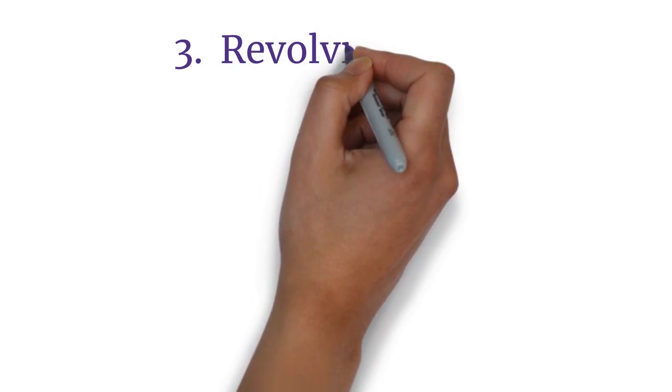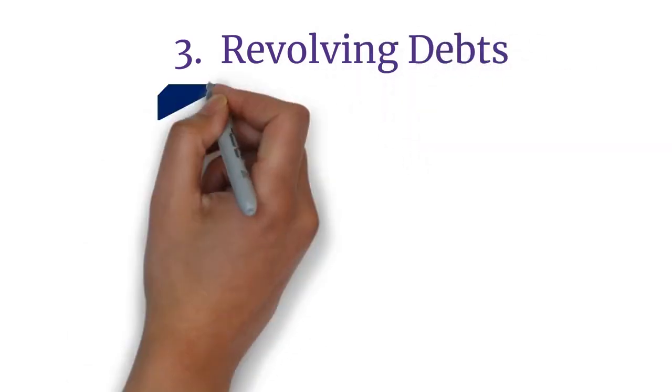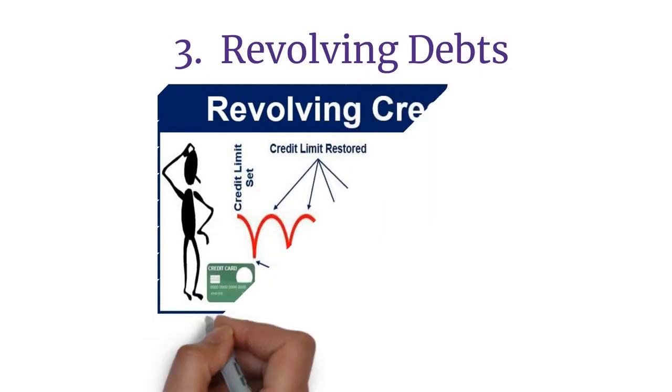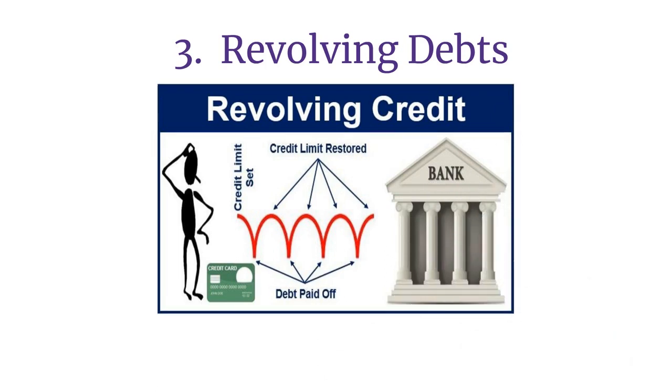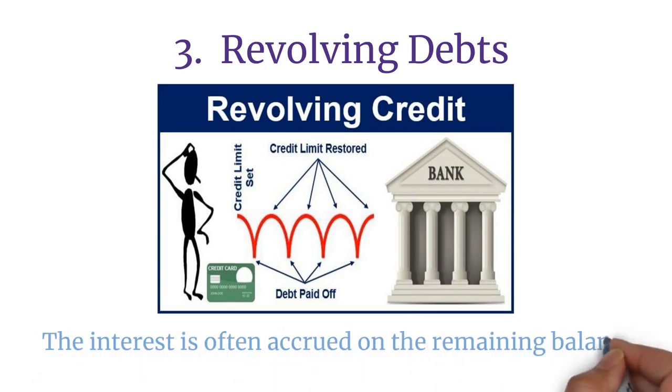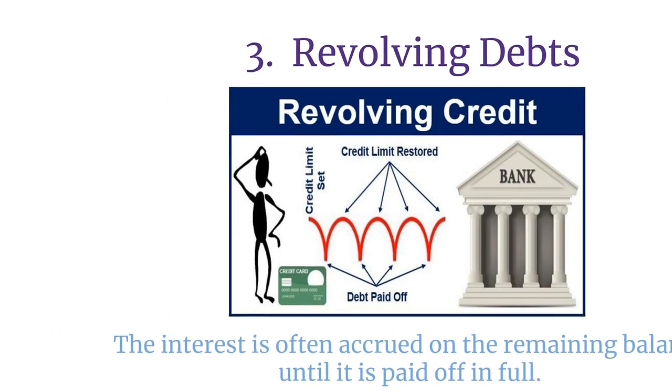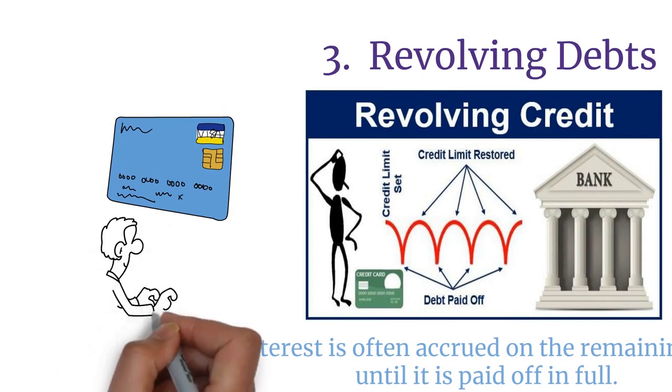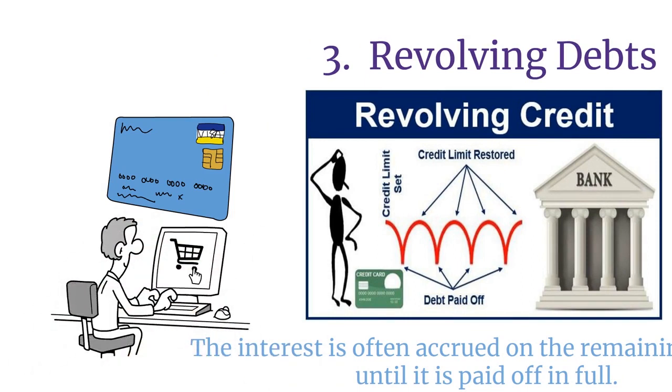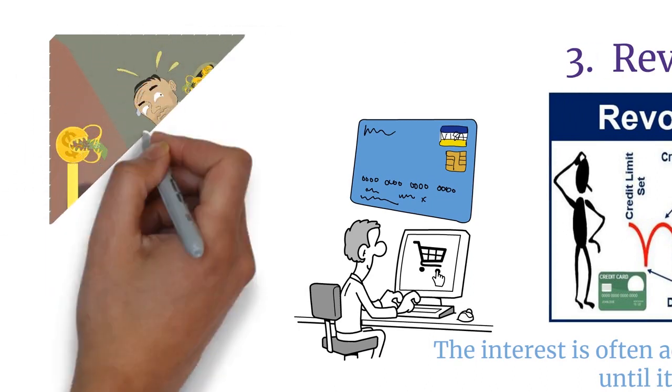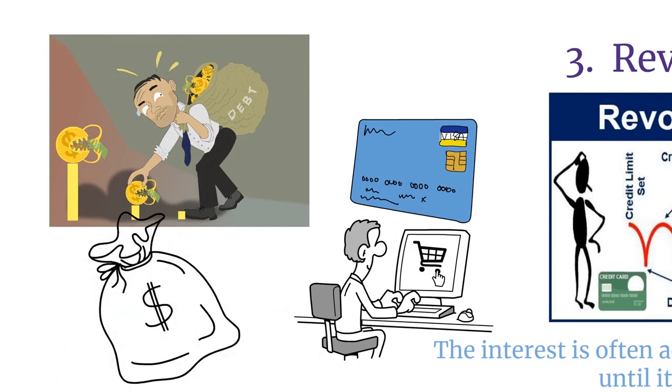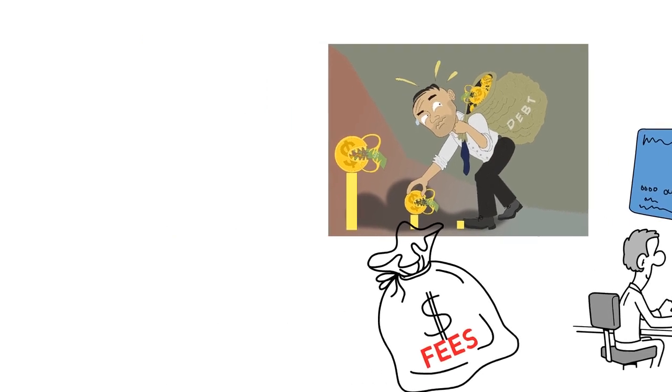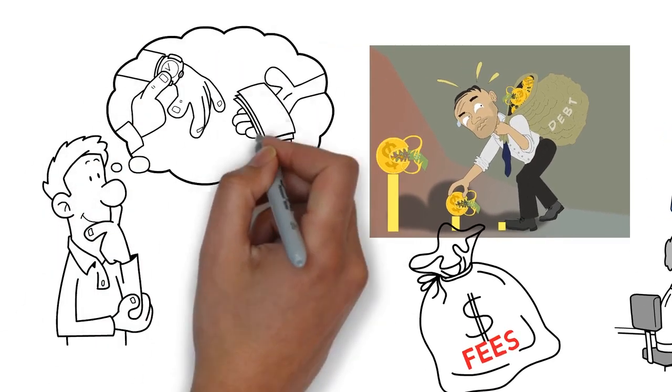Revolving debts. Revolving debts are lines of credit that can be accessed and used over and over again. This means that the borrower can use the available credit as needed within a predetermined limit. The interest is often incurred on the remaining balance until it is paid off in full. A common example of this is a credit card which the user can use to purchase items and then make payments on the outstanding balance. This type of debt is often seen as one of the more expensive options due to the high interest rates and fees associated with it. They also have the advantage of being more flexible and allowing borrowers to make payments over time.